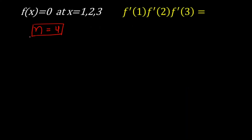From the previous slide, the degree is n = 4 and one of the roots is a repeated root — either 1, 2, or 3. Let's draw out the cases. Case 1: the repeated root is x = 1, so f(x) = (x−1)²(x−2)(x−3).